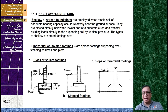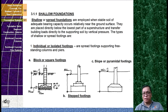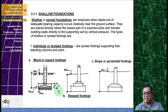The types of shallow foundations include spread footings. The first are individual or isolated footings. These are spread footings supporting piers, columns, and piers. These are the examples you can commonly see here in the Philippines.